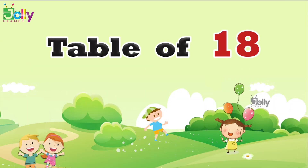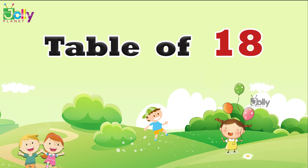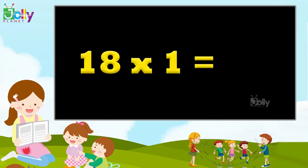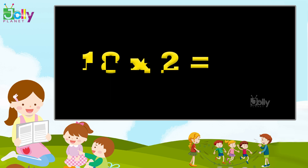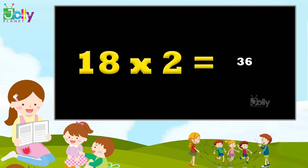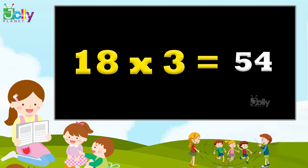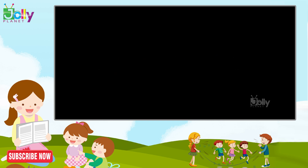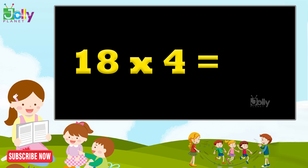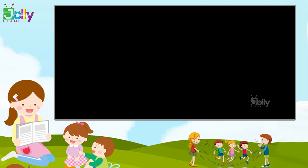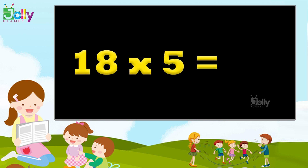Table of 18: 18 ones are 18, 18 twos are 36, 18 threes are 54, 18 fours are 72, 18 fives are 90.